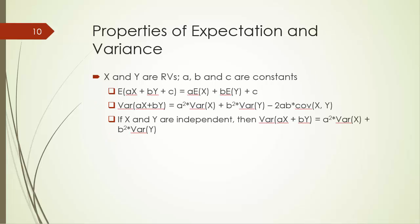Let's look at some properties of expectation and variance. Let X and Y be two random variables, and let a, b, and c be constants. We have the following properties: Expectation of (aX + bY + c) equals a times expectation of X plus b times expectation of Y plus c. Variance of (aX + bY) equals a² times variance of X plus b² times variance of Y plus 2ab times covariance of X and Y. This simplifies when X and Y are independent, because covariance of X and Y is zero.